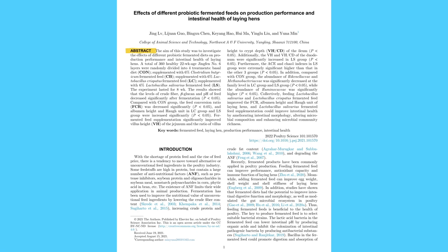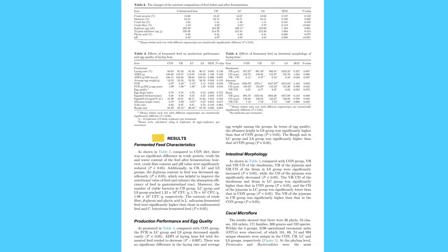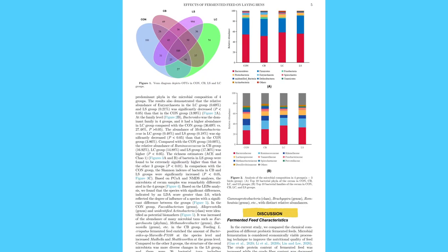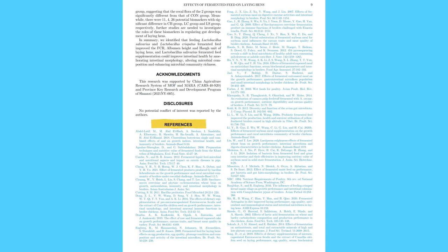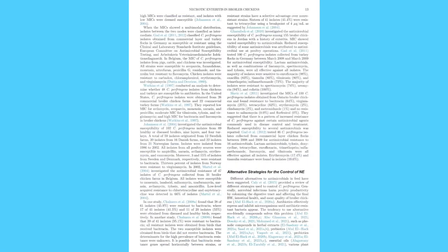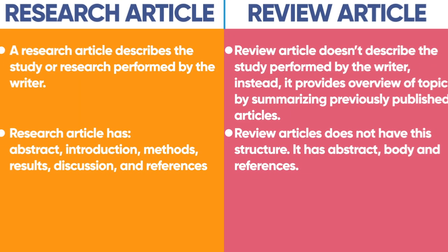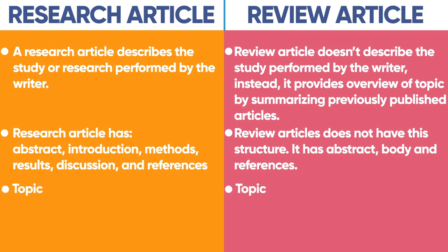For example, if you look at this research paper, it has abstract here, introduction here, methods here, results here, discussion here, and references here. Whereas if you look at this review paper, it has abstract here, body here which is divided into many topics, and you can see references right at the end. Sometimes you can also differentiate a research paper and review paper by looking at the topic.